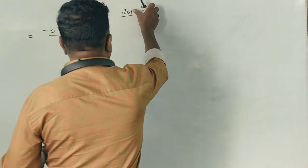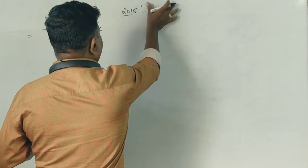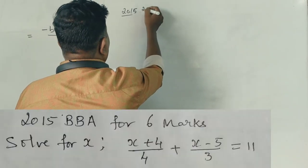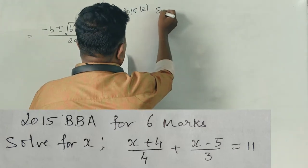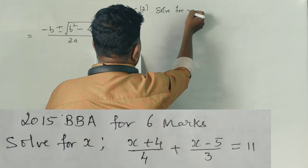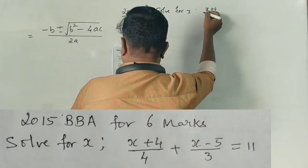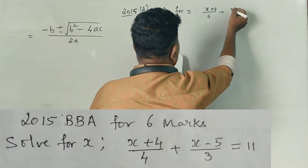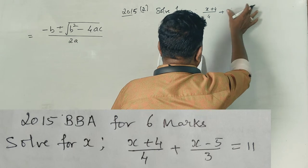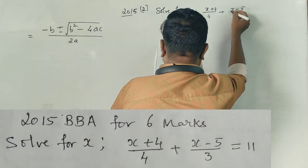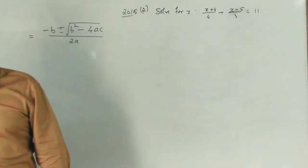Guys, here is a 2015 question. BBA, 6 marks. Question number 2. Solve for x: when (x+4) divided by 4 plus (x+5) divided by x minus (x-5) divided by 3 is equal to 11. This is the question.